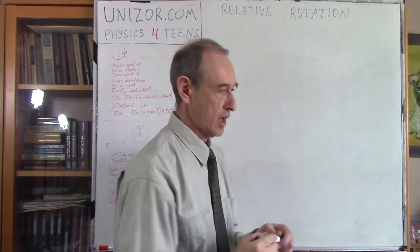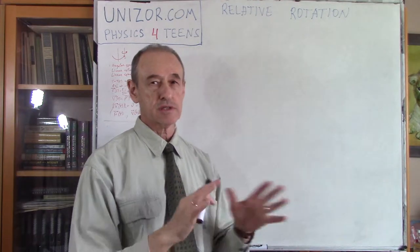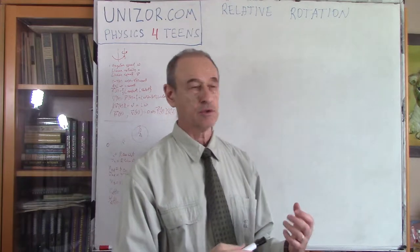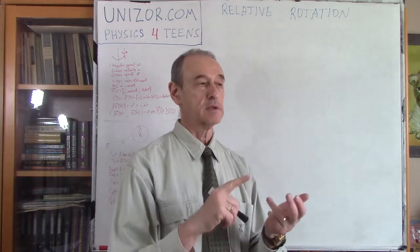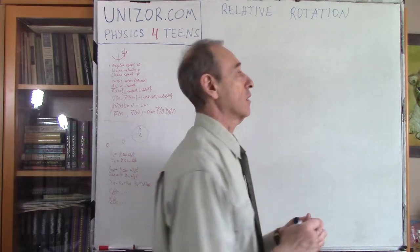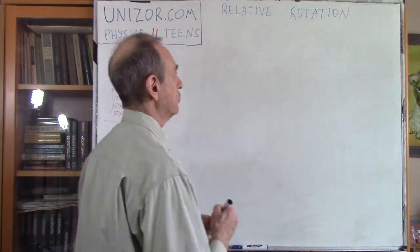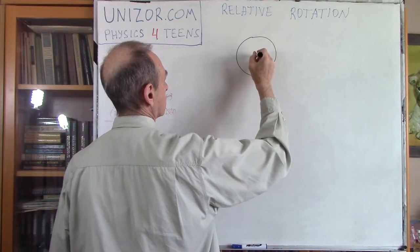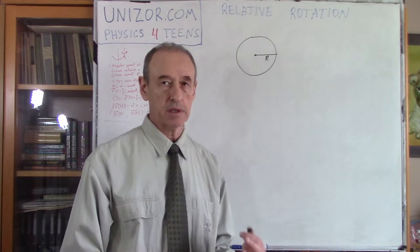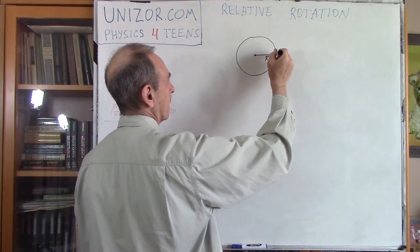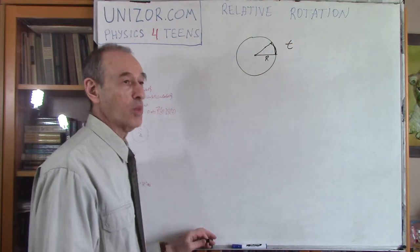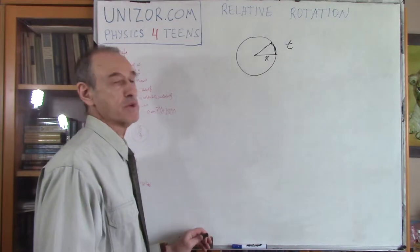Now before going into the complexity of this relative rotation, let's maybe one more time — it may be a repetition but it's still important — address a couple of concepts related to rotation. In particular: angular speed, velocity vector of rotation, and linear speed. First of all, angular speed. If you have an object which is rotating, let's say there is a radius R here, and it rotates uniformly. What does it mean? It means that the length of the arc covered during time t is always proportional to time t with the same coefficient of proportionality.